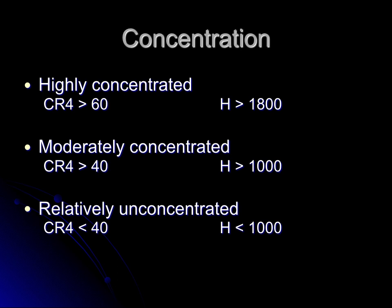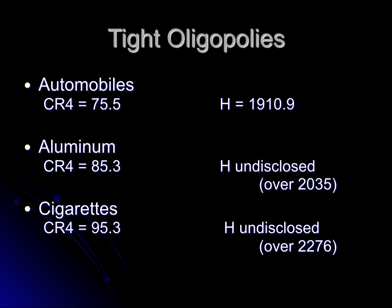Looking at the same industries from the last presentation, we can see that tight oligopolies have very high Herfindahl Indexes, exactly as expected — the large firms hold a very large share of the market, so when we square those values they substantially exceed 1,800. For automobiles, the Herfindahl Index is 1,910. For the aluminum industry, the exact number isn't disclosed because it would reveal individual company market shares, but we can back-calculate a minimum of 2,035. For cigarettes, similarly undisclosed, the Herfindahl Index is at least 2,276 — confirming these are very tight, highly concentrated oligopolies.